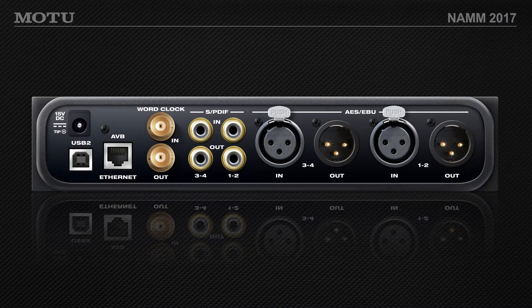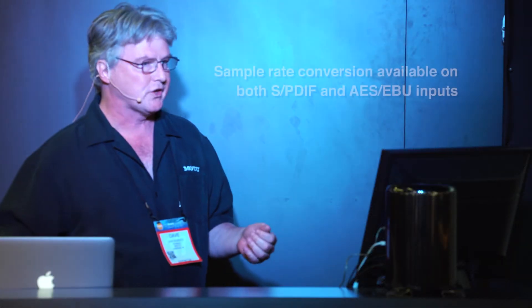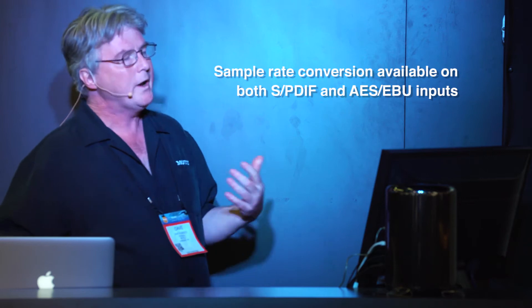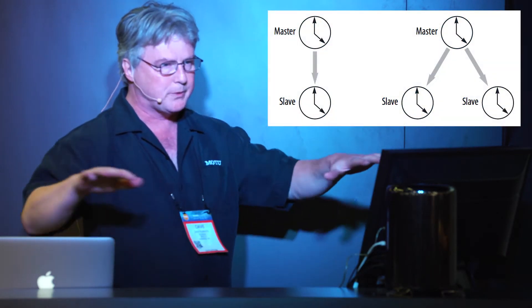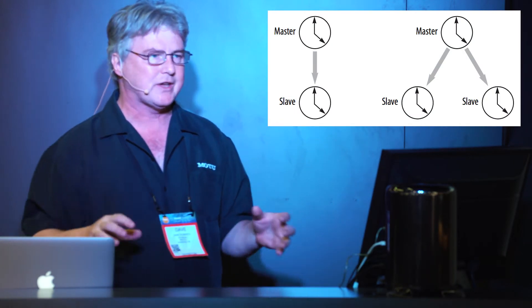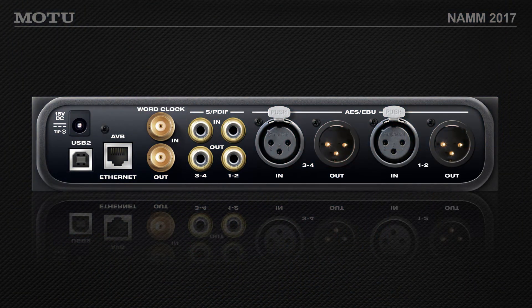On the back panel of the 8D: four channels of AES-3, four channels of SPDIF input and output. A cool thing about the AES inputs is they do sample rate conversion. When you have interconnected digital audio hardware, it has to share a common sample clock and a common sample rate — one clock master and every other piece of gear slaves to that at the same sample rate. So if I bring in a piece of gear that doesn't want to slave to external sync and is running at a different sample rate, maybe an old Kurzweil K2000 or a DAT machine, I can plug into the AES inputs on the 8D and it will do real-time sample rate conversion to match the rest of the system.